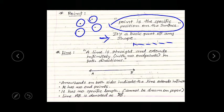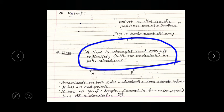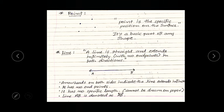Next is line. What is a line? A line is straight and extends infinitely with no end points in both directions. The first part of the definition — a line is straight. The second part — it extends infinitely. Infinite means the one which does not end.